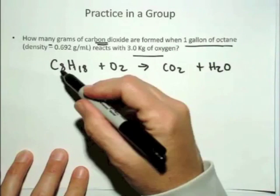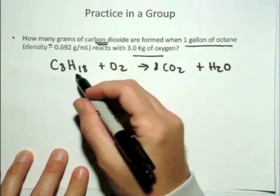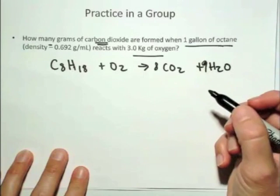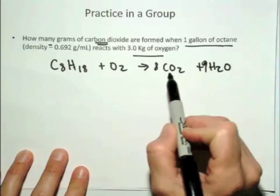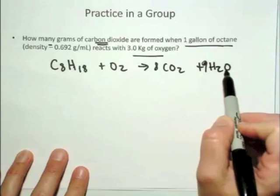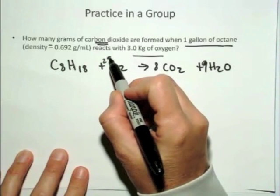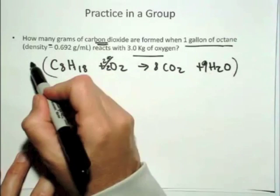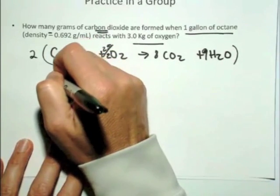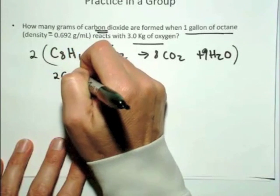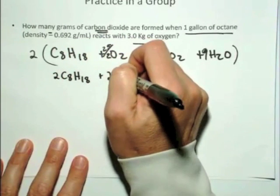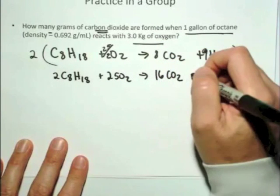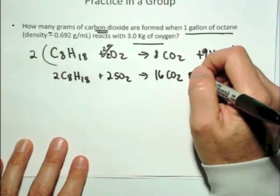You need to balance it. There's eight carbons, there's 18 hydrogens, so I put a nine out front of that, and now I'm left with a total of 25 oxygens on this side, which is an odd number, so I'll use my little trick, 25 halves, multiply both sides by two, and then the balanced chemical reaction is going to be 2C8H18 + 25O2 gives 16CO2 + 18H2O.